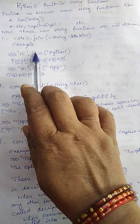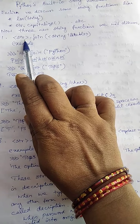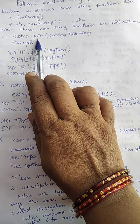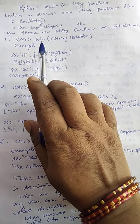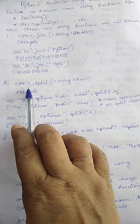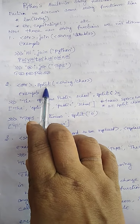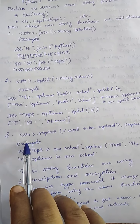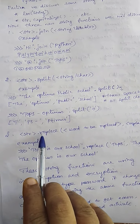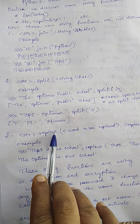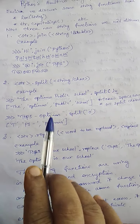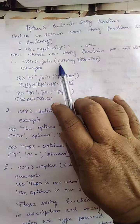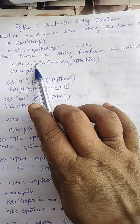What are the functions? The first one is string dot join. The next function is string dot split. Then the third function is string dot replace. We will discuss each one by one clearly.